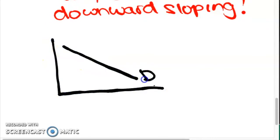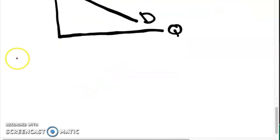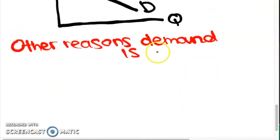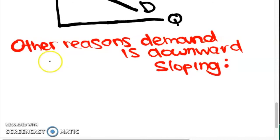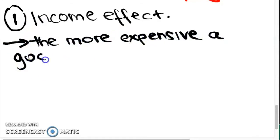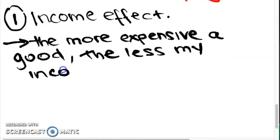The reason that the demand curve is downward sloping is because of the income effect. The more expensive a good is, the less my income can buy that good. So therefore the income effect results in me being able to buy less of the good. So quantity demanded of that good falls.